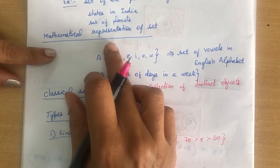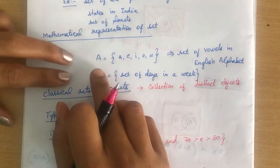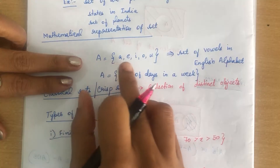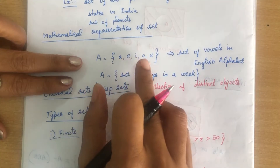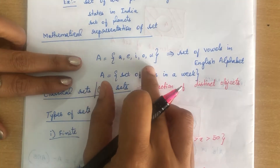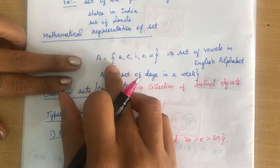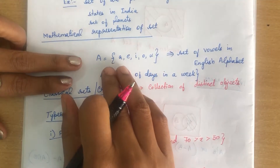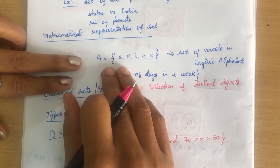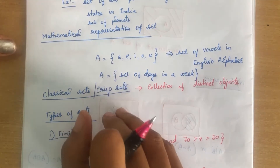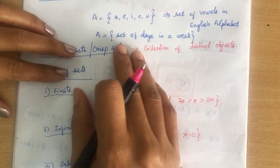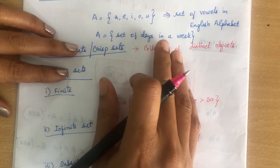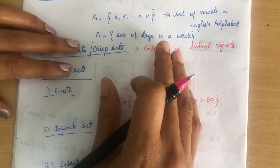The mathematical representation of a set is, for example, A is a set which contains vowels: A, E, I, O, U — enclosed in curly braces. This is how we represent a set. We can also give examples like the set of all days in a week — this is also a set.